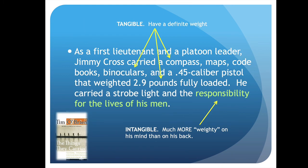One more example, from The Things They Carried: 'As a first lieutenant and platoon leader, Jimmy Cross carried a compass, maps, code books, binoculars, and a .45 caliber pistol that weighed 2.9 pounds fully loaded. He carried a strobe light and the responsibility for the lives of his men.' You get the juxtaposition of all the tangible things he's carrying — compass, maps, weapon, strobe light, which have a definite weight — juxtaposed with the responsibility for the lives of his men, which doesn't physically weigh anything but is very weighty on his mind. That's juxtaposing the tangible with the intangible.